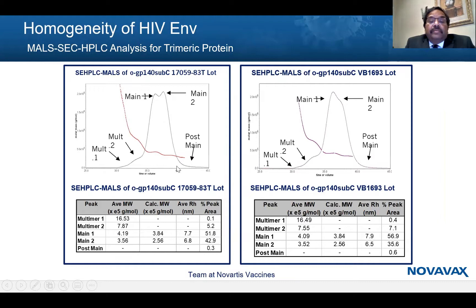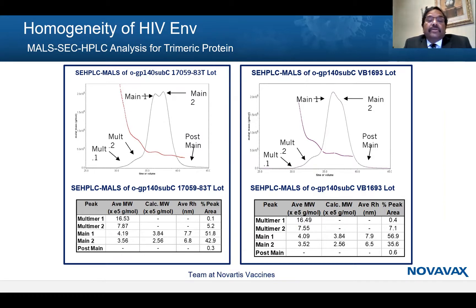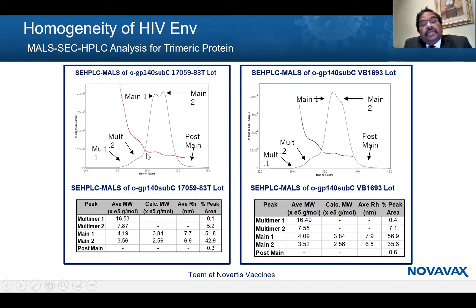For the trimeric protein, we use multi-angle light scattering in conjunction with size exclusion and refractive index. There are two main peaks: one has about 420 kDa, and the other is slightly smaller at about 356 kDa — possibly due to slight aggregation affecting the calculated size. Both batches are giving us a comparable data set.